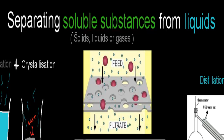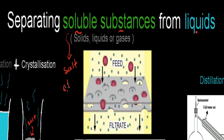What we're going to talk about in this video is how we can separate soluble substances from liquids. Soluble substances are basically substances which can be dissolved. For example, it could be salt, which is dissolvable in water, or it could be ethanol, which is also dissolvable in water. So we're trying to find ways that we can separate salt or ethanol from liquids, such as, in this case, mostly water. So how can we separate salt from water?